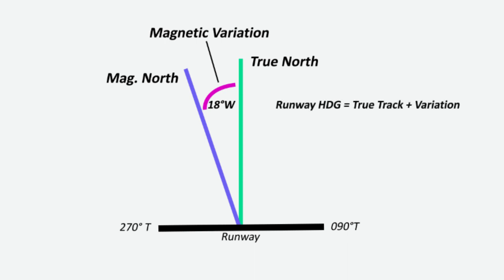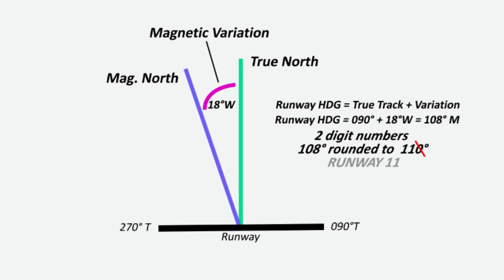Runway heading is equal to true track plus variation. If it is west, we can use this example of saying west is best, so we add, and east is least, so we subtract. This will give us a magnetic heading for our runway to be 108 degrees. Runway numbers consist of two digits. They are referenced relative to magnetic north, rounded to the nearest ten, and then dropping the last zero. So therefore, this runway will be runway 11.